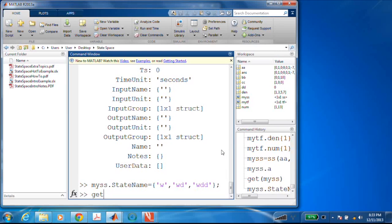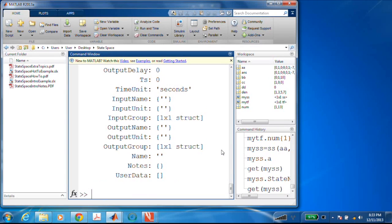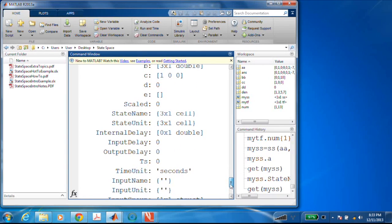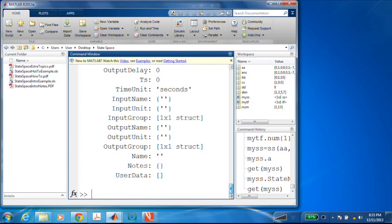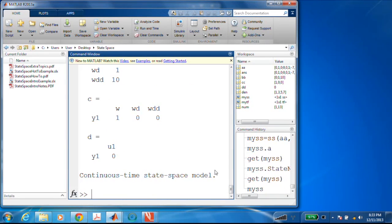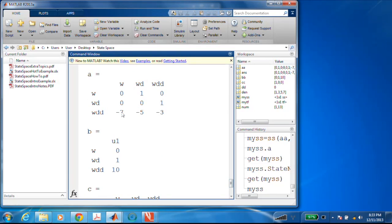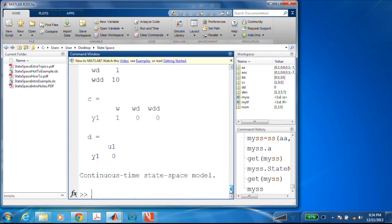And now when I look at get my SS, I will see that my state name has some stuff in it. And when I just say my SS here, now it actually labels my A matrix with the states. So it just gives me a little bit better way of understanding or relating what I see in the MATLAB window to what I maybe wrote down on a piece of paper. But that was a little bit of a sidetrack.